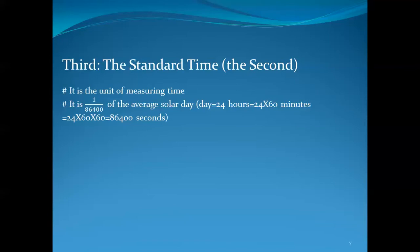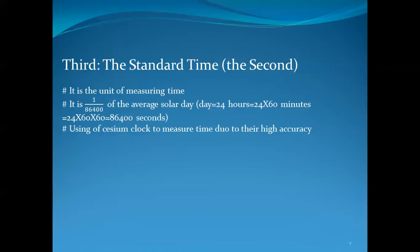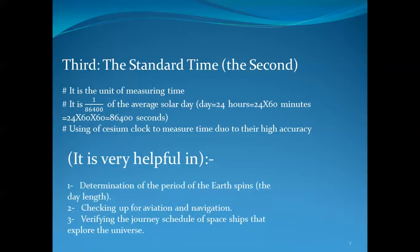Scientists use a cesium clock to measure time due to its high accuracy. The cesium clock is very helpful in determining the period of the Earth's spin — that is, the day length.